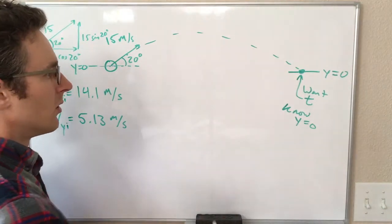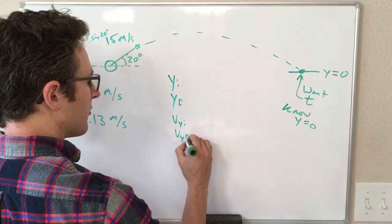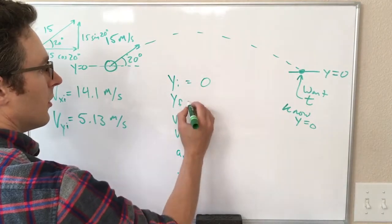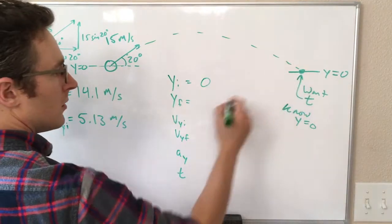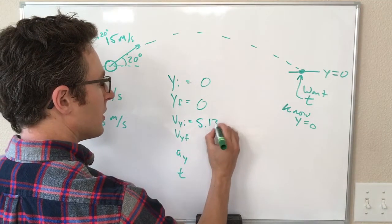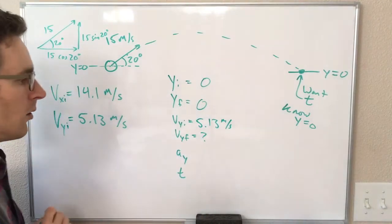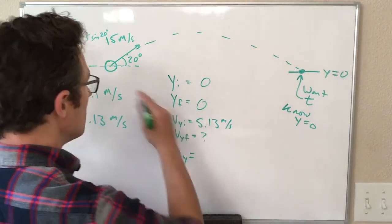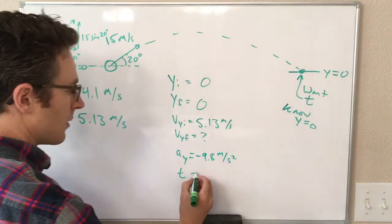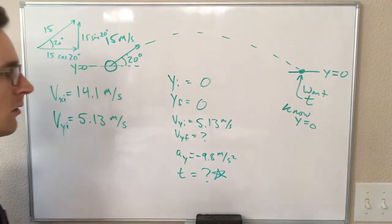So let's write down everything we know in the y direction: y initial, y final, Vy initial, Vy final, Ay, and T. We know y initial is zero. We know y final is also zero. Vy initial, we just found, that's 5.13 meters per second. Vy final, we do not know. Ay, again, assuming this is on Earth unless we're told otherwise, minus 9.8 meters per second squared. And time, we do not know, but we would like it.